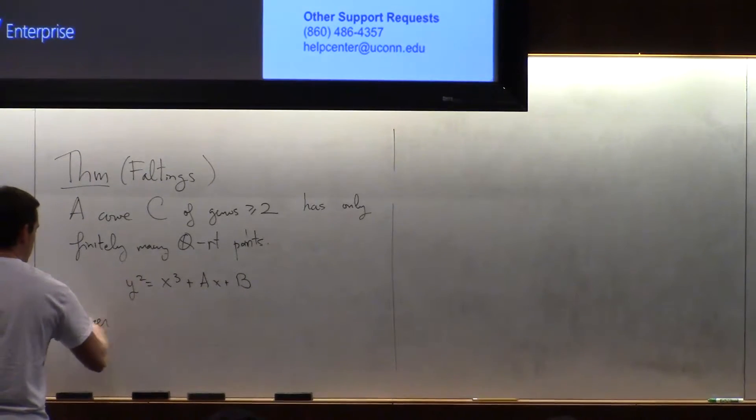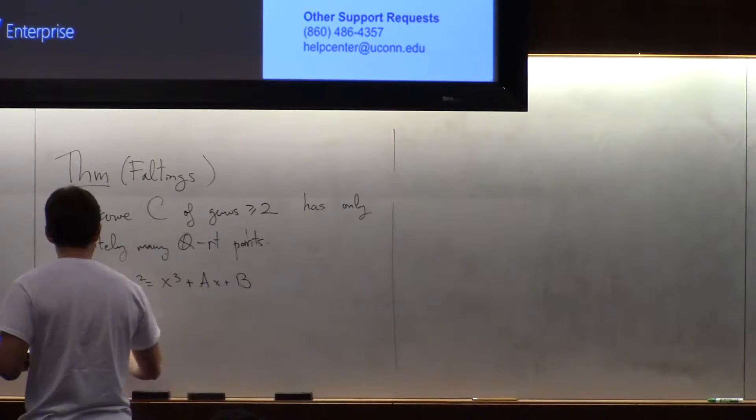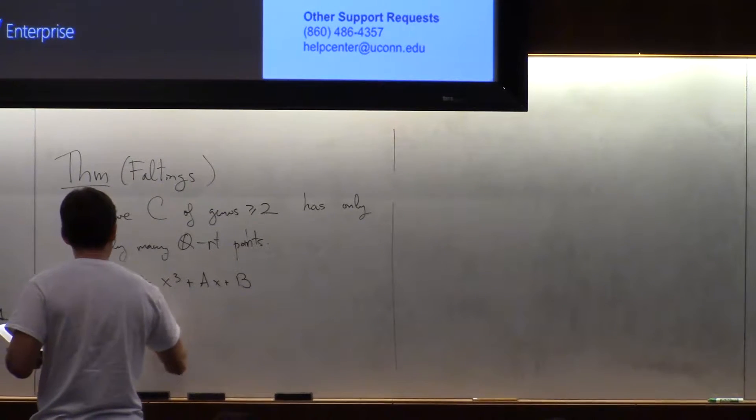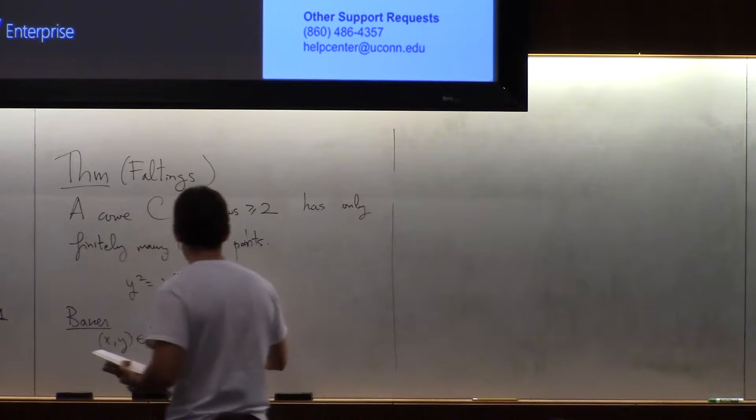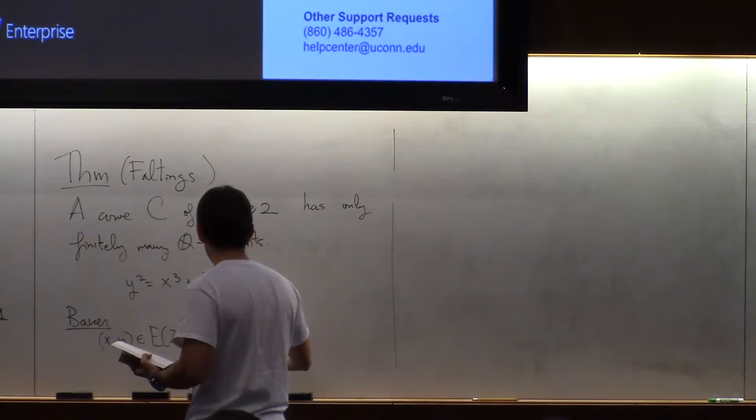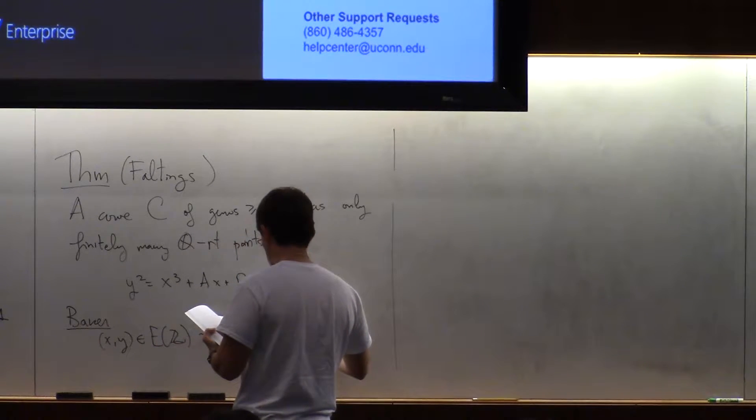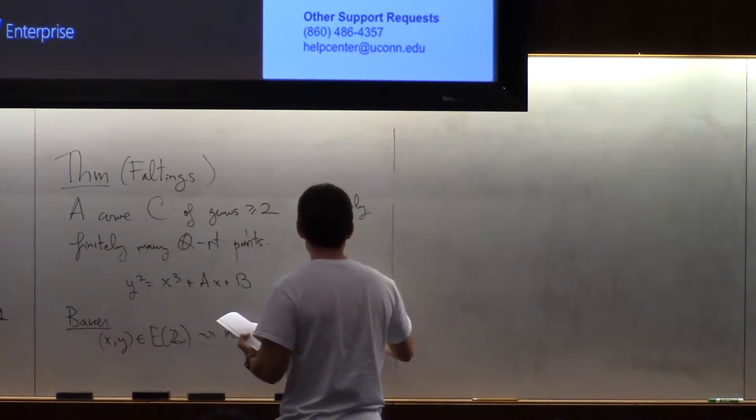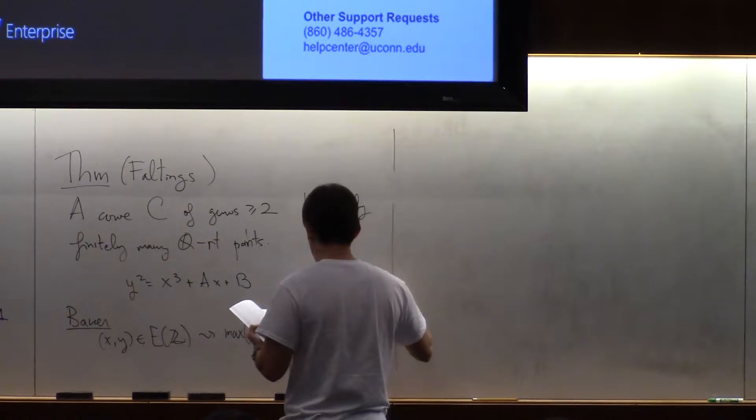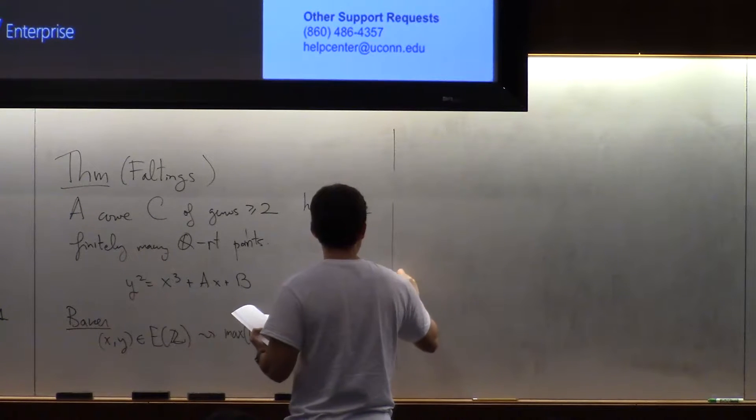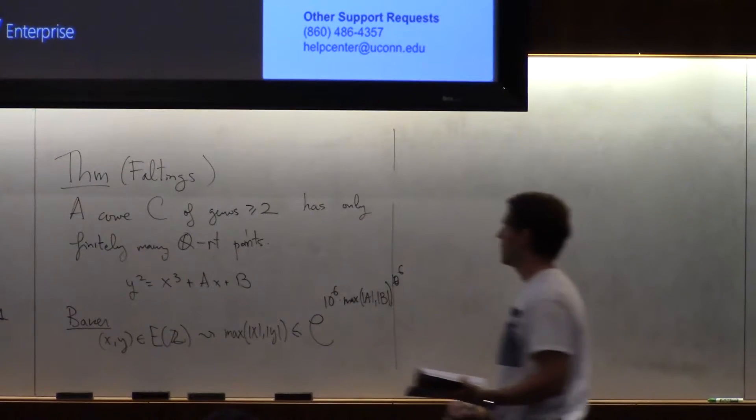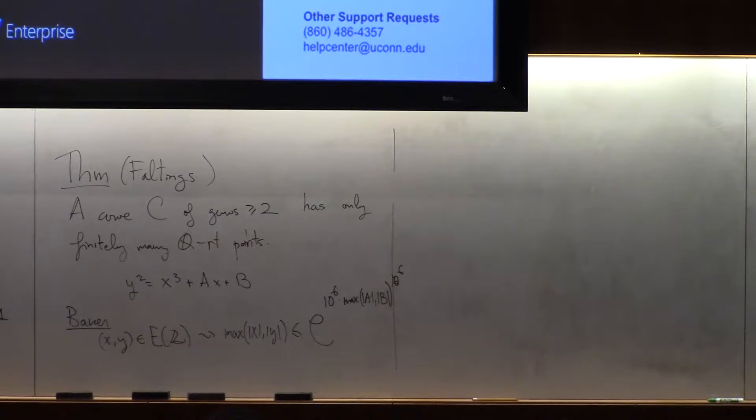So Baker proved that if x, y is an integral point, then the maximum of x or y is less than or equal to e to the 10 to the 6 times the max of a and b to the 10 to the 6th power. So yes, there is such a bound. Completely useless. But there is such a bound.